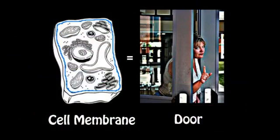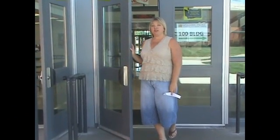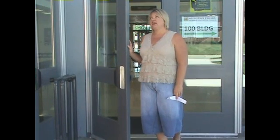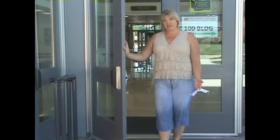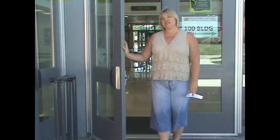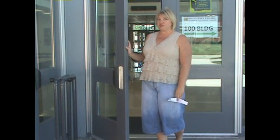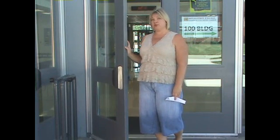The cell membrane of a cell is like the doors to a school. The cell membrane also protects the cell. It controls the movement of materials in and out of the cell. This door and myself as a door monitor are like the cell membrane because we control who comes in and out of the school.